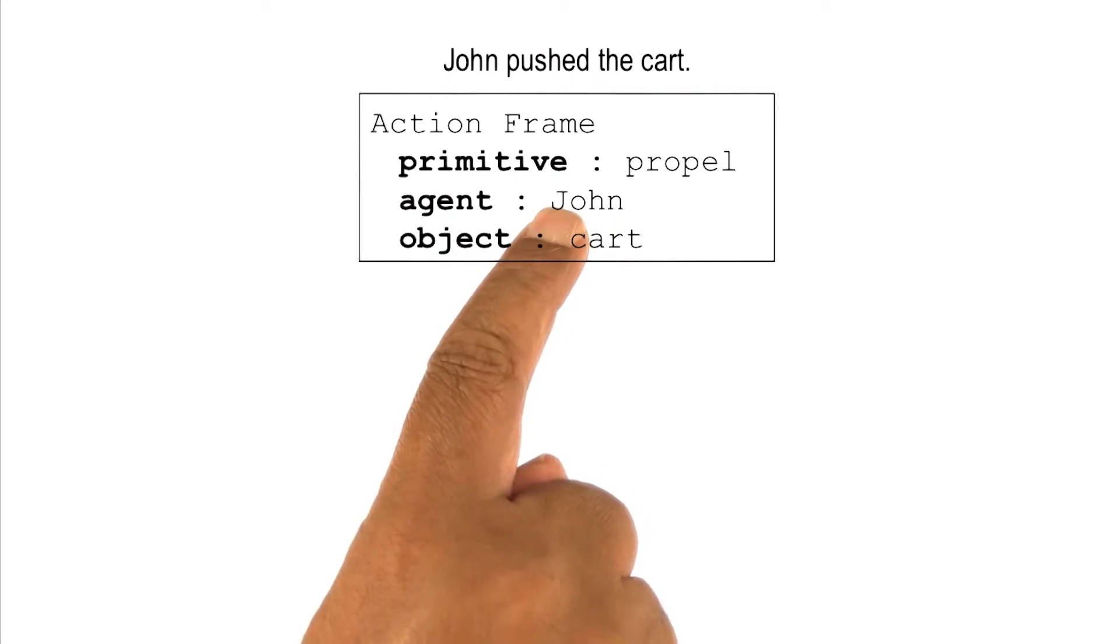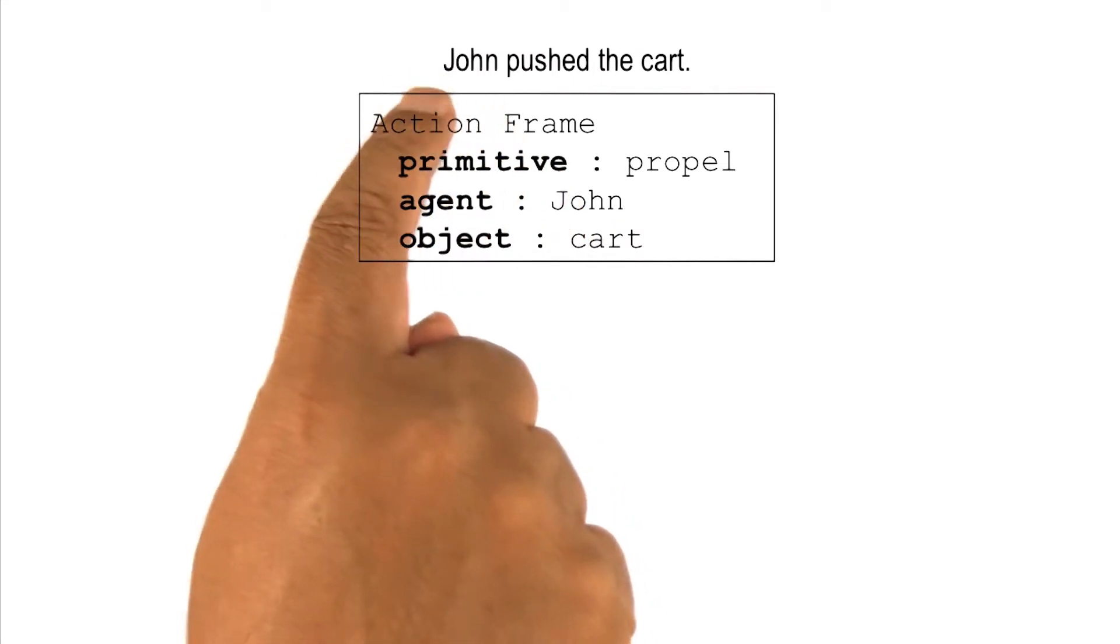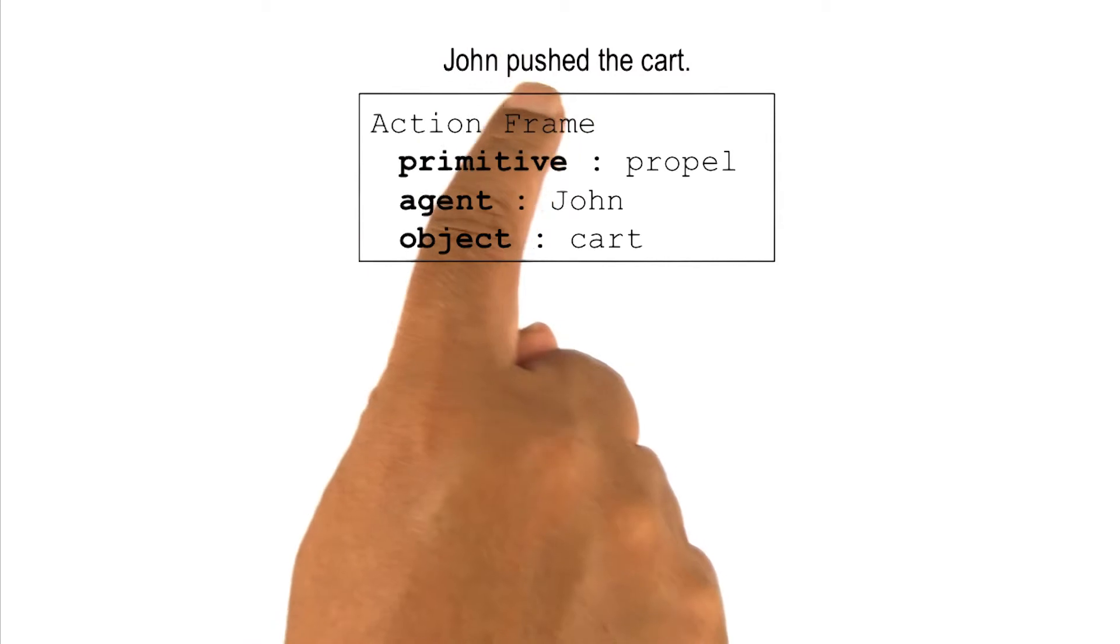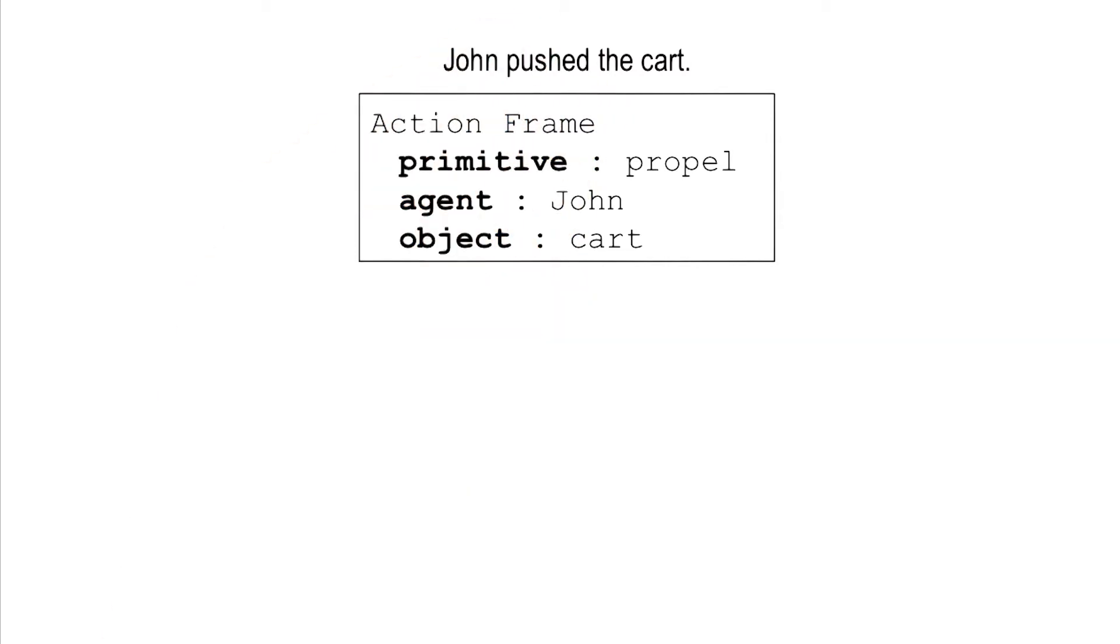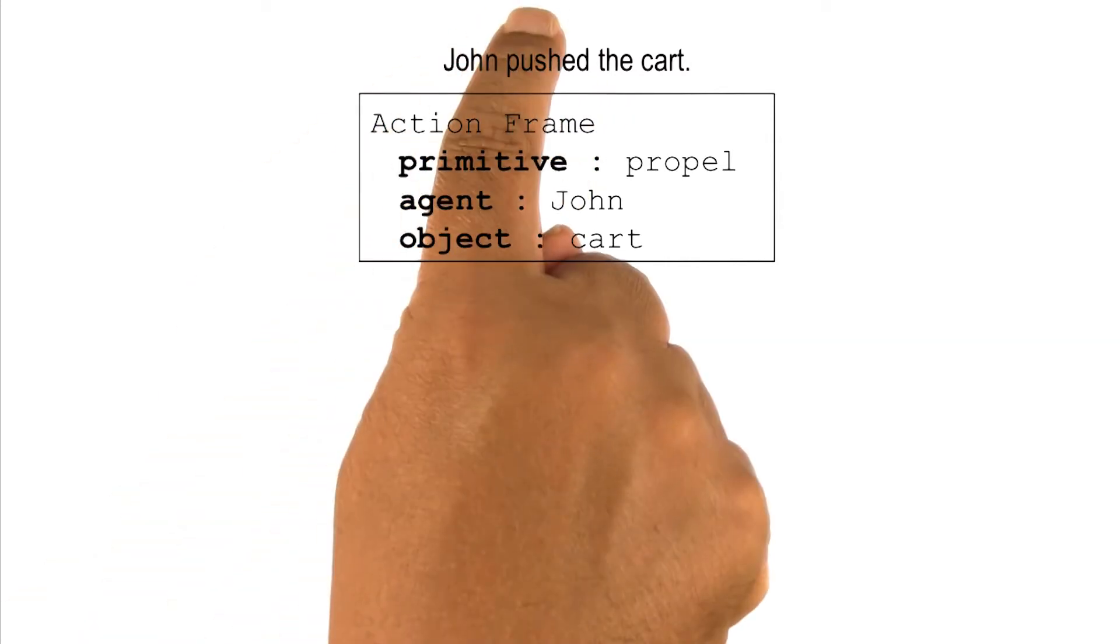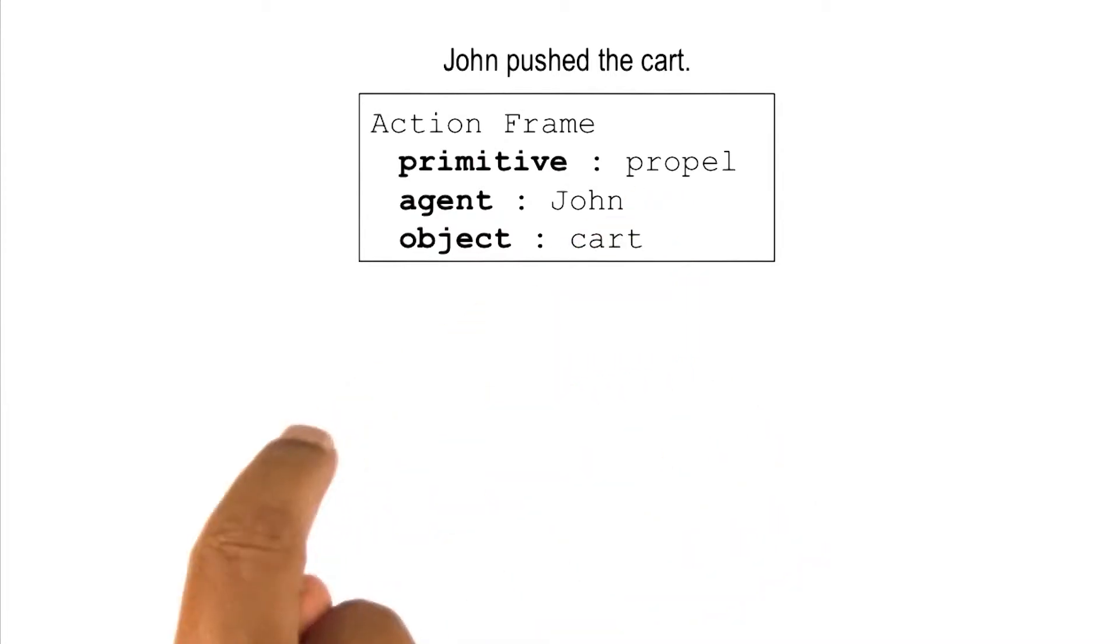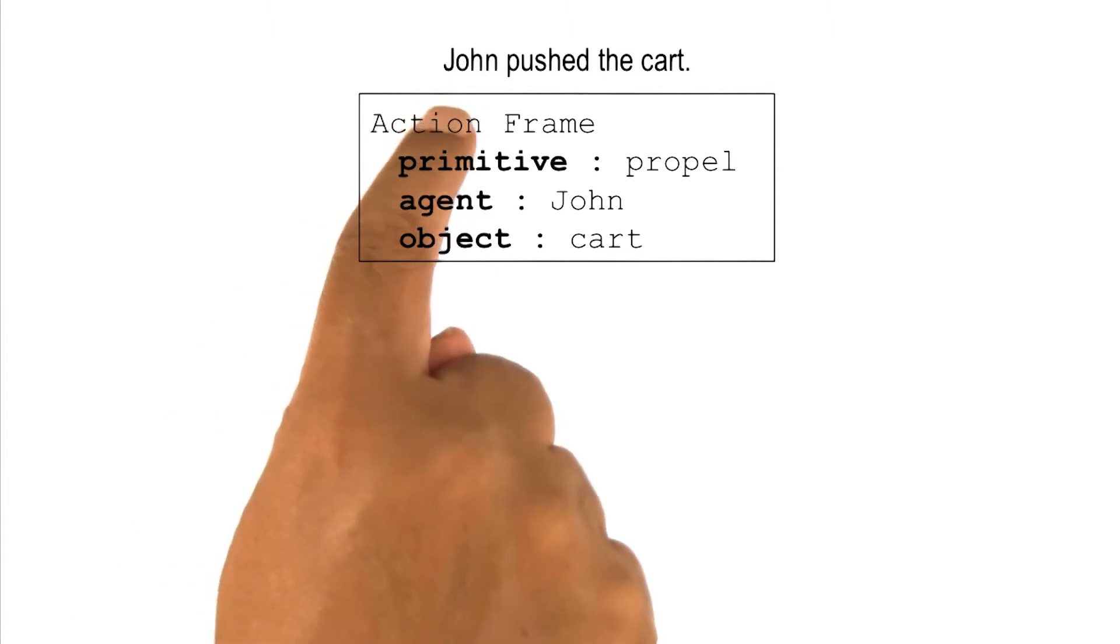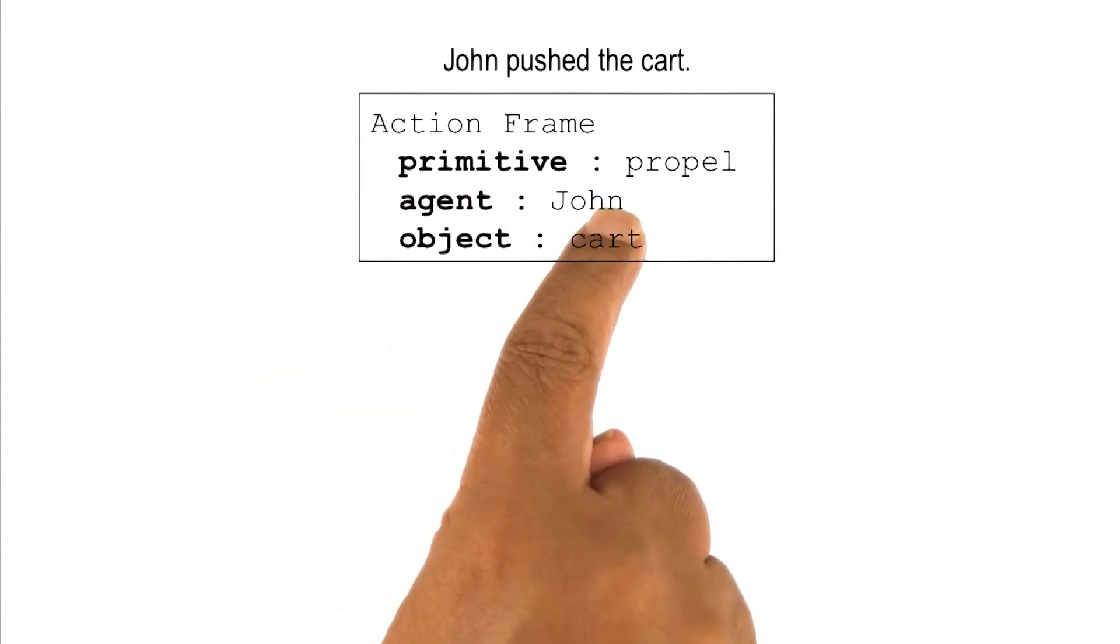Here is a rule which says that if there is a concept just before the verb, and that concept is animate, then whatever that concept is, put it here. There is a concept just before push, that's John. And let's suppose that we have a lexicon which tells us that John is animate, then we'll put John here.